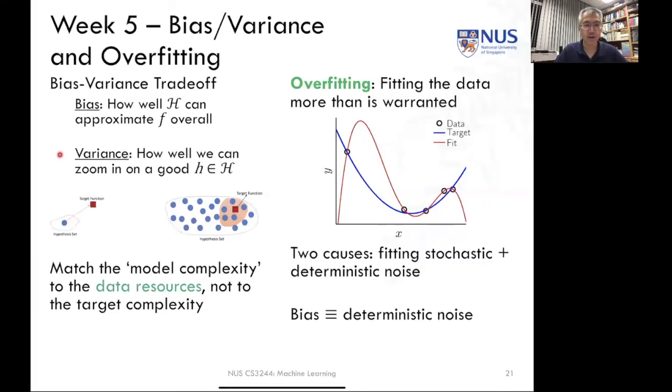Secondly, we also looked at the variance. The variance measures how well a particular h that we can find within our hypothesis set could actually zoom in on the right one. So even if the hypothesis set that we have here might be very rich, and our target function is actually represented within it, the variance error tells us how much are we affected by our choice of data set. So each data set that we have could lead us to a different solution within the hypothesis set. And to find the correct target function then becomes a function of whether the target data that we have actually leads us to the target function easily or not.